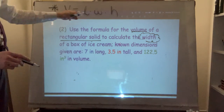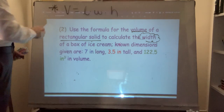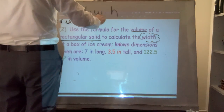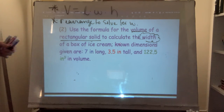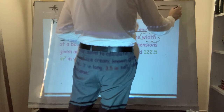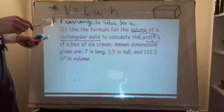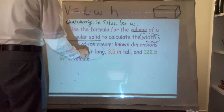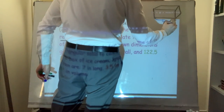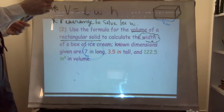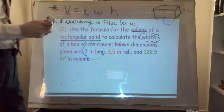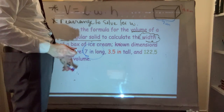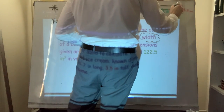This is going to require a little bit of algebraic rearranging — that's really the point of the exercise. The formula is V = L × W × H, and we're going to specifically solve for width, which means we have to rearrange this. You can draw a picture of the box of ice cream and fill in the information: seven inches for length, 3.5 inches for height, and 122.5 cubic inches for volume on the inside.